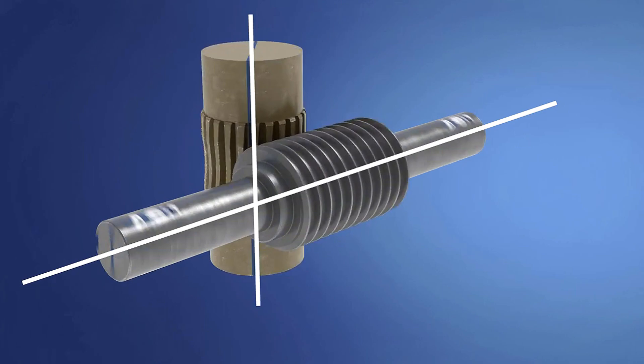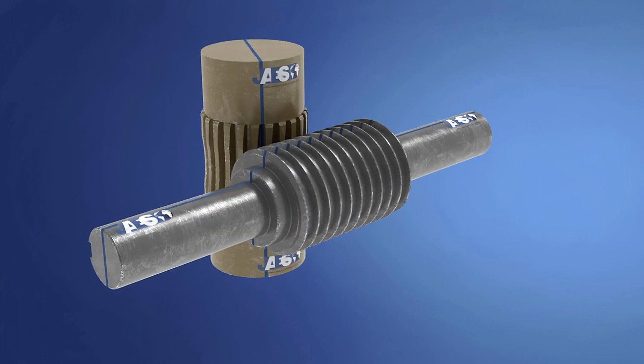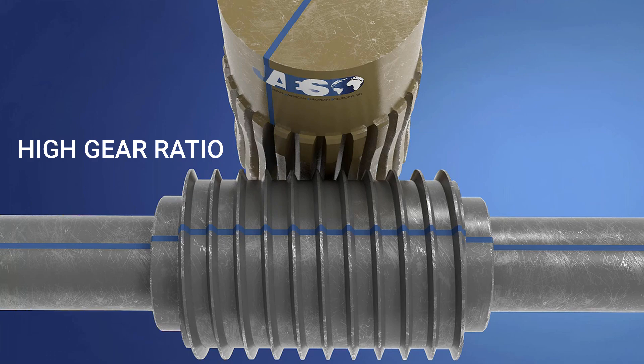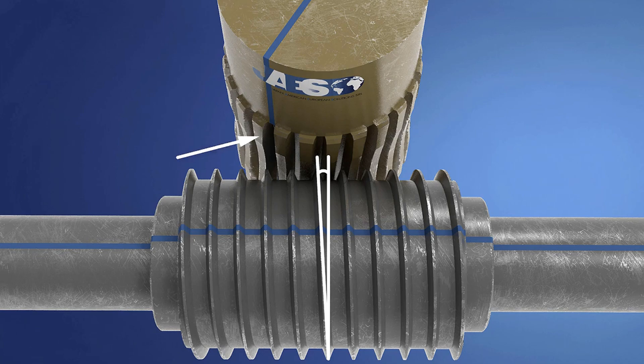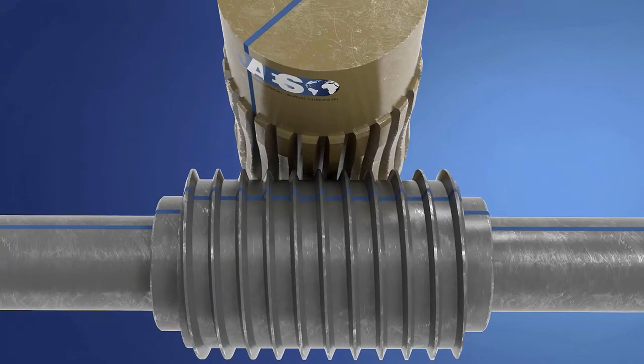Worm screw and gear arrangement has a high transmission ratio, which depends on the thread angle of the screw and the number of teeth of the worm gear. The screw transmits the rotary motion to the worm gear. Usually, this motion can only be transmitted from the screw to the worm gear and not the other way around.